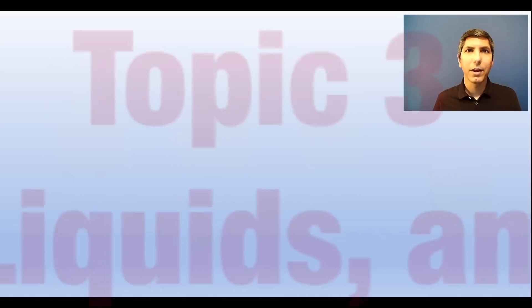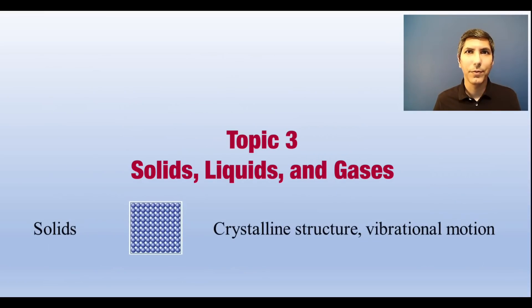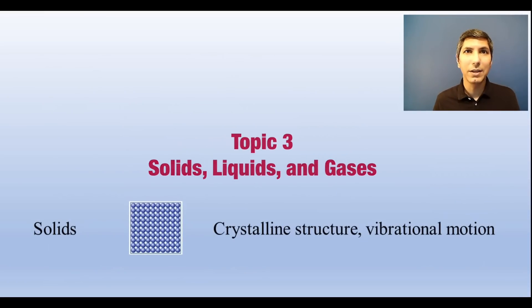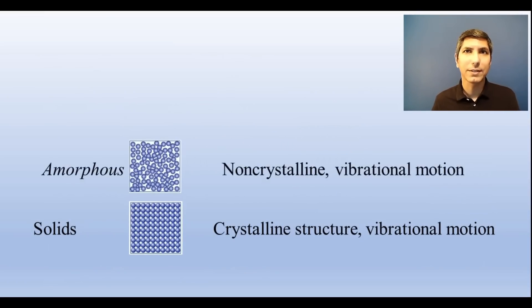True solids are crystalline in structure. Some materials are solids, but not completely crystalline. We call these amorphous solids. These include materials like plastics and other semi-solid materials with a non-crystalline structure.